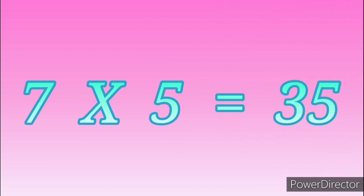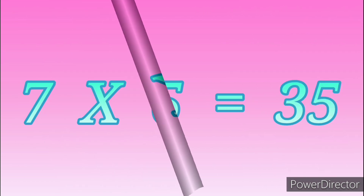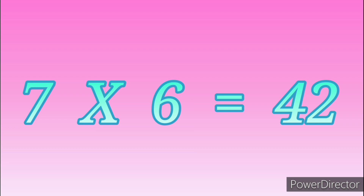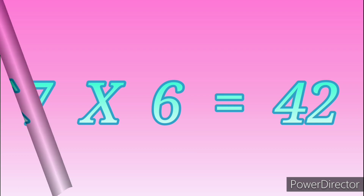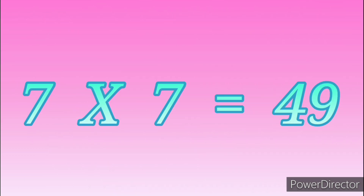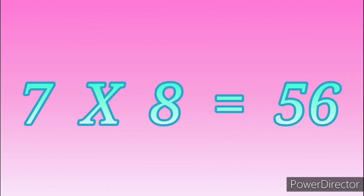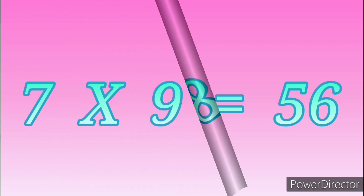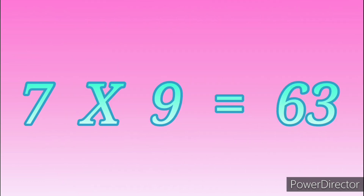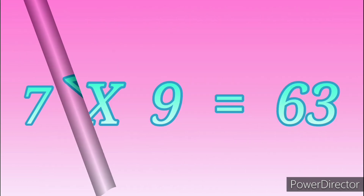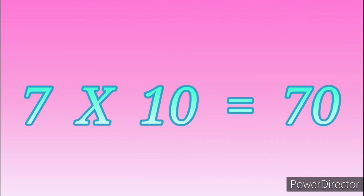Seven fives are thirty-five. Seven sixes are forty-two. Seven sevens are forty-nine. Seven eights are fifty-six. Seven nines are sixty-three. Seven tens are seventy.